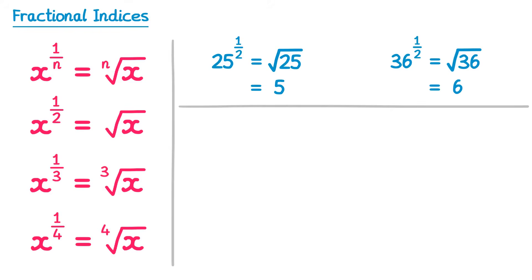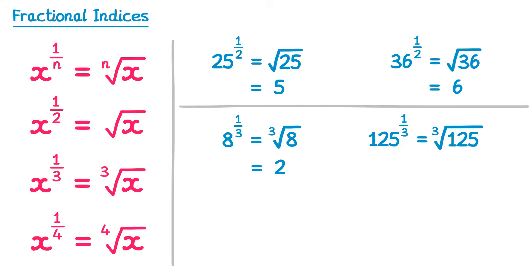What about some with a power third? Well, 8 to the power 1 third means we do the cube root of 8, so we're looking for the number we multiply 3 times to get 8, and that's 2, since 2 times 2 times 2 is 8. And 125 to the power 1 third — we do the cube root again, looking for the number we multiply 3 times to get 125, which is 5, since 5 times 5 times 5 is 125.